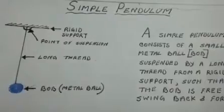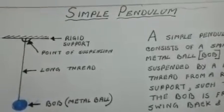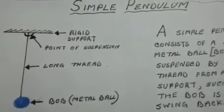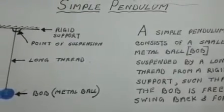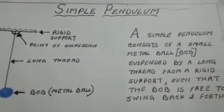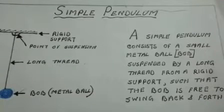What is a simple pendulum? A simple pendulum consists of a small metal ball, which is called bob, suspended by a long thread from rigid support such that the bob is free to swing back and forth.